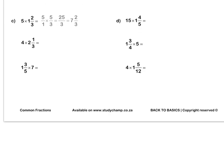Question C: we rewrite 5 as 5 over 1 and 1 and two thirds as an improper fraction. We can't simplify in our question, so we multiply out and we get a final answer of 7 and two thirds as a mixed number. Press pause to complete questions C and D by yourself.